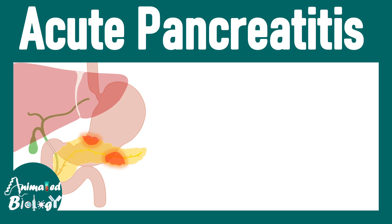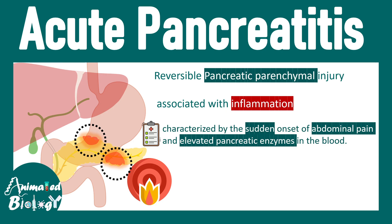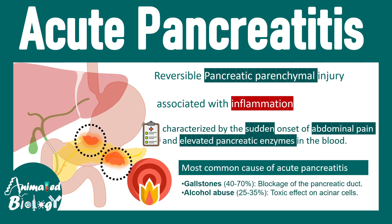In this video we'll talk about acute pancreatitis, which is a reversible pancreatic parenchymal injury associated with inflammation. In acute pancreatitis there is a sudden onset of abdominal pain and abnormal elevation of pancreatic enzymes in the blood. The most common causes of acute pancreatitis are either alcohol abuse or gallstones.